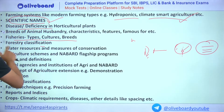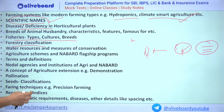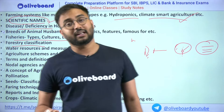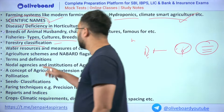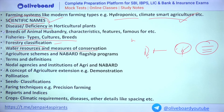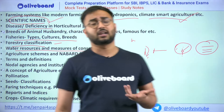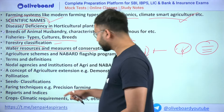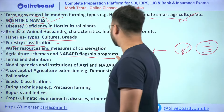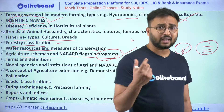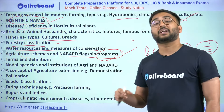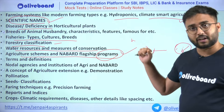For fisheries, cover its types, culture, and breeds. For forestry, cover classifications — different classification systems can be asked — and scientific names of forest trees, including those commonly used and those never previously asked. Water resources and measures of conservation can also be asked, such as what is baulk levy and different methods of irrigation. For agricultural schemes and NABARD flagship programs, cover the Wadi program, RIDF (questions asked many times), and subsidiaries of NABARD.